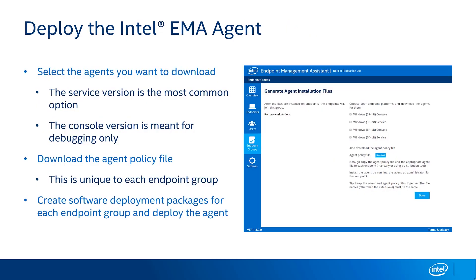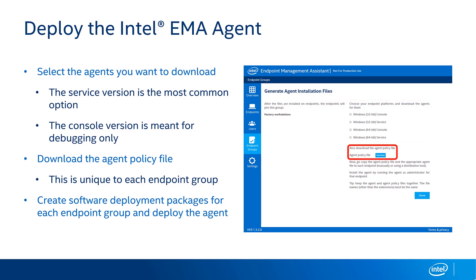Now that we have all of our configurations built and everything set to automatically configure AMT, let's talk about making that happen by deploying the Intel Emma agent. When you go to the agent installation files page, you'll see options for choosing the version of the agent, and options for service and console versions — the service version is most common, while the console version is strictly for debugging. Once you've downloaded the appropriate Windows service version for your architecture, you'll also need to download the policy file, which defines which endpoint group the device should go into and how to configure AMT. You run the service installer as an administrator, it reads the policy file, and registers the device with the Intel Emma server.